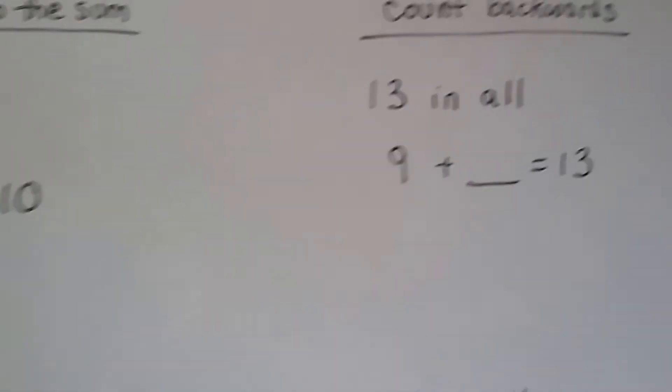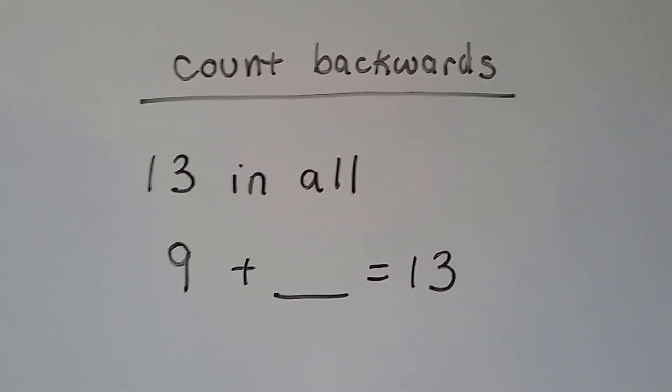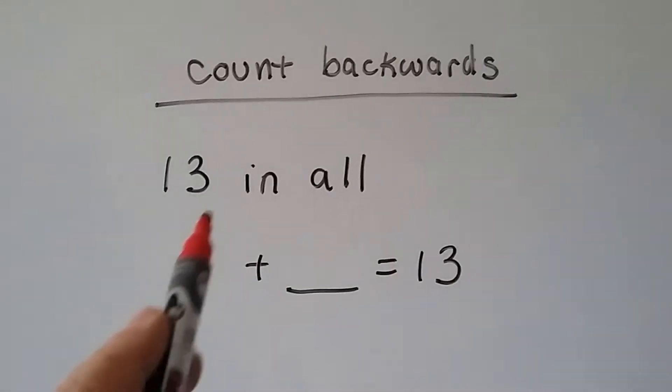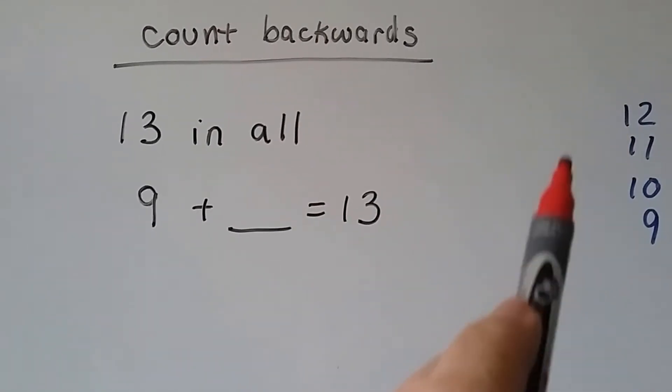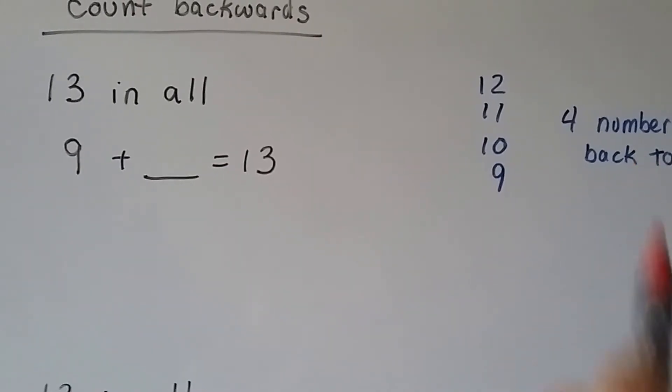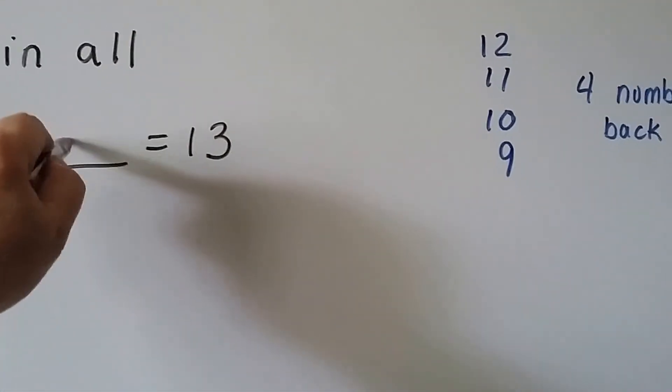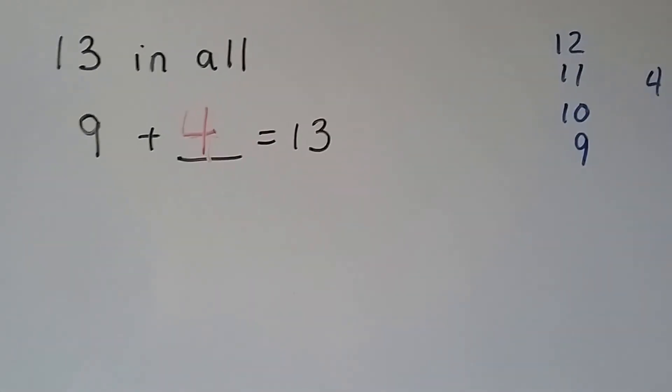We can also count backwards. There's 13 in all. 9 plus something equals 13. We're going to start at the 13 and count backwards to the 9. So we have 12, 11, 10, 9. And we used 4 numbers to get back to the 9. So 9 plus 4 equals 13.